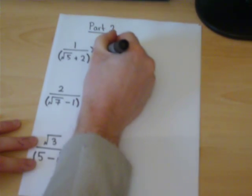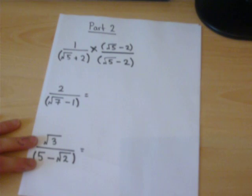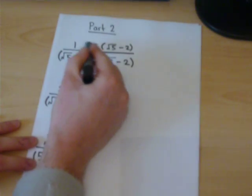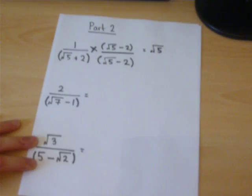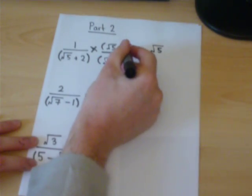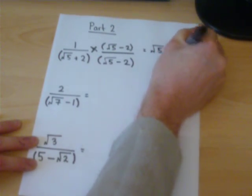We then have to work out the top and the bottom separately. And this is where some little shortcuts come in. The top's standard. So 1 times root 5 is root 5. 1 times minus 2 is minus 2.